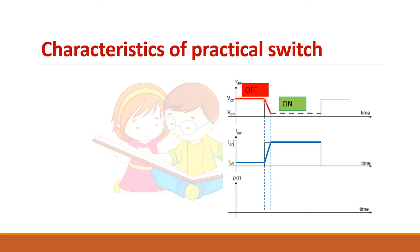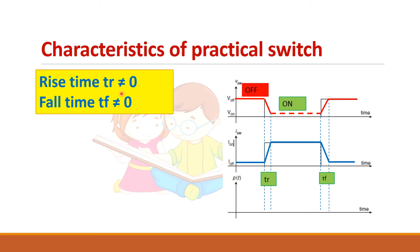Similarly, voltage cannot come back to zero immediately — it takes some time, and there will be some forward voltage drop that will not become zero. The same thing happens while coming from on to off state. It takes time, current will not become zero, and voltage will rise to its V value in a particular time called fall time. So rise time is not equal to zero and fall time is not equal to zero in a practical switch, which are zero in an ideal switch.